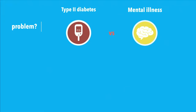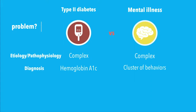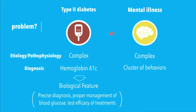I'll talk about a comparison of a mental health disorder with another medical condition. Let's take type 2 diabetes as an example — both have pretty complex etiology and pathophysiology. However, diabetes has a biological marker: measuring glucose or A1C in your blood, which gives us very precise tracking of the disorder and testing different treatments — which is not the case for mental health disorders.